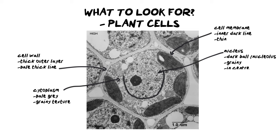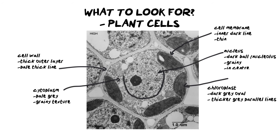Then we're going to look out for our chloroplasts. Chloroplasts are a dark gray oval and they often have thicker parallel lines in them. The outside is the chloroplast boundary and then there are these thicker stacked lines on the inside — you can see the slightly thicker bands here. You're looking for these long lines; sometimes they're parallel to each other which makes it even easier to identify.